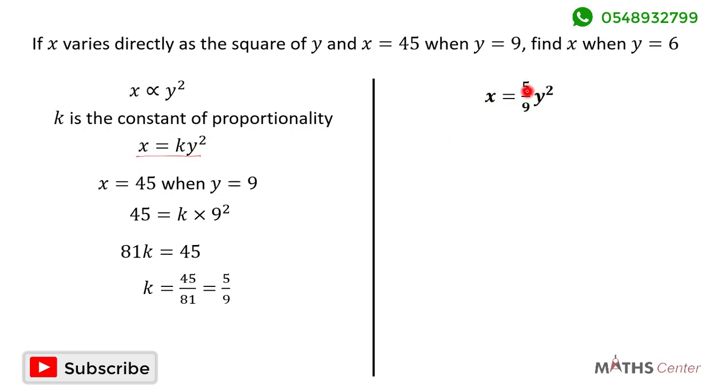We can now use this to find the value of x when y is equal to 6. When y is equal to 6, x is equal to 5 divided by 9 times 6 squared. 5 divided by 9 times 6 squared will give us 20.